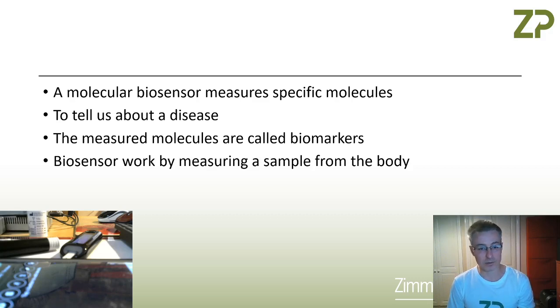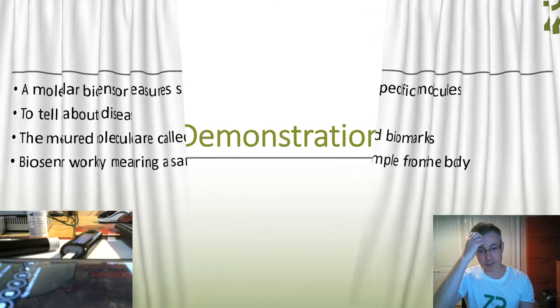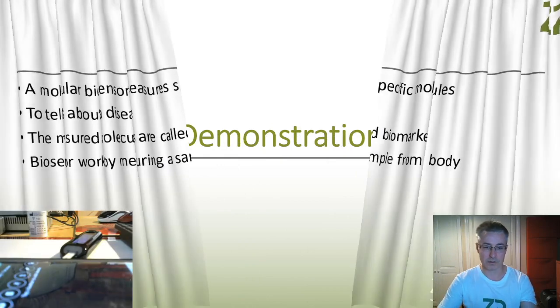Biosensors work by measuring something from the body. The kind of samples could be saliva, for example in the case of COVID-19, it could be urine, it could be sweat in terms of things like cystic fibrosis, or it could be interstitial fluid. There's a lot of wearable sensors called CGM where they put a patch on your body and continuously measure glucose. In this particular case, we're going to measure glucose in the blood.